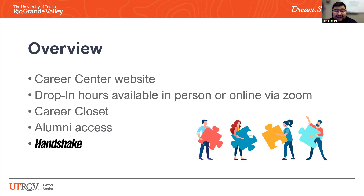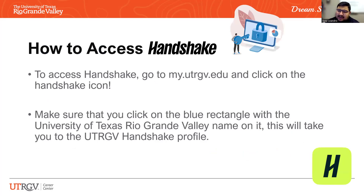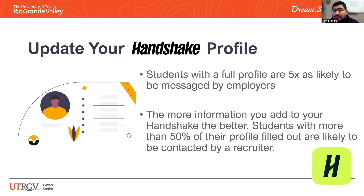A major resource we offer is Handshake — the green square with the H when you log into myUTRGV. When you first set up your profile, it asks for information that takes about 10 to 15 minutes to complete. Fill it out completely — the reason is to make sure your profile is viewed by employers. Since UTPA till now, we've partnered with about 900,000 employers, all listed on Handshake. Students with a full profile are five times more likely to be messaged by employers.